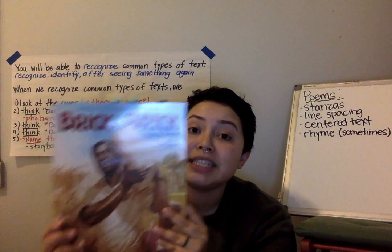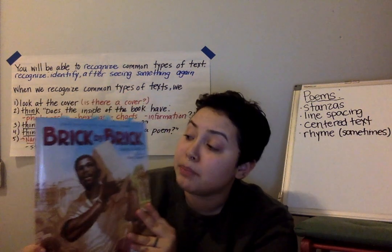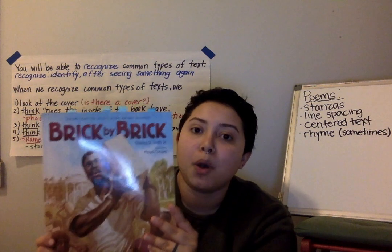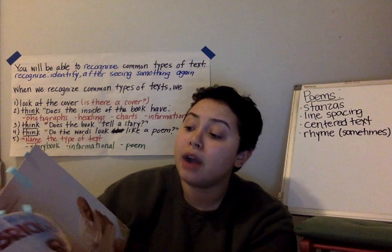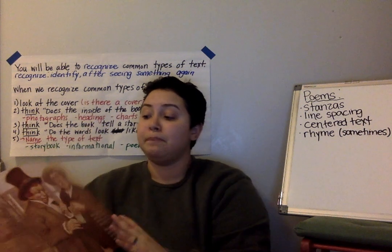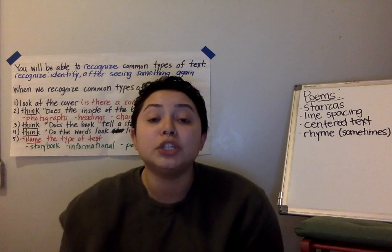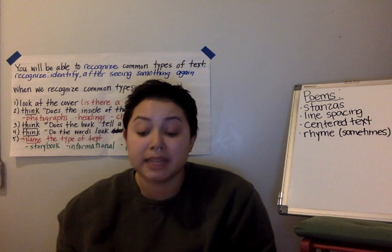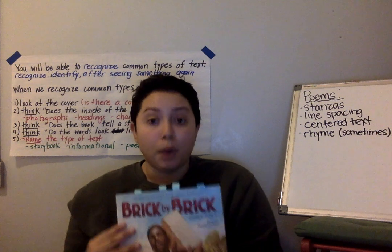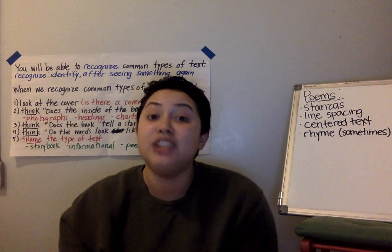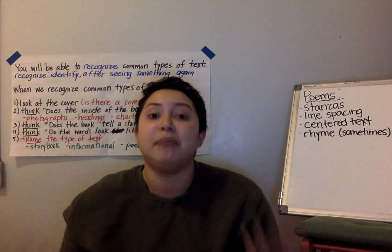This book is special — it's different than the books that we've read before because it is written just like a poem. A poem on every single page that keeps going and going to tell one story. So it's a really long poem. Now, what you can do at home is you can look at the different types of books that you have and tell your families whether or not they are written as a poem, an informational text, or a storybook. And don't forget to send your pictures to your teachers too.